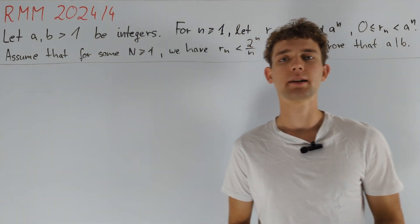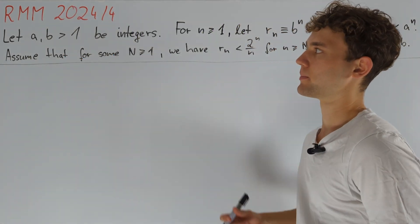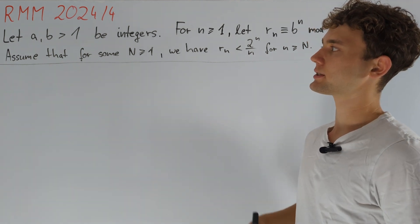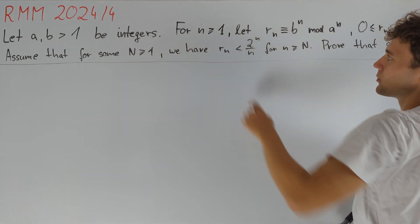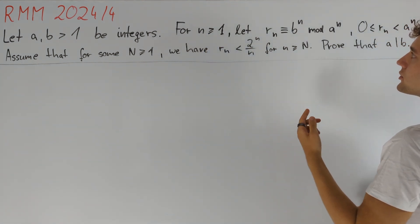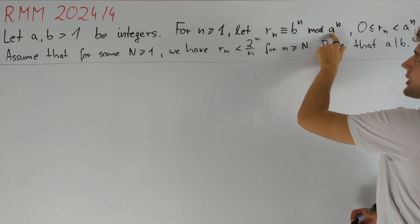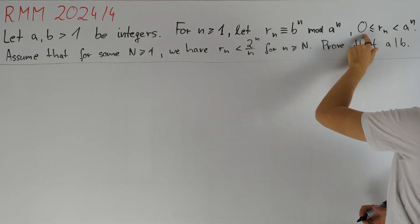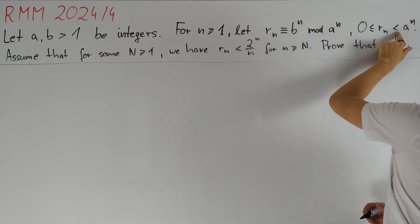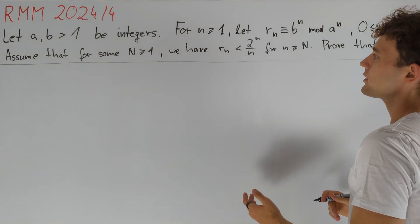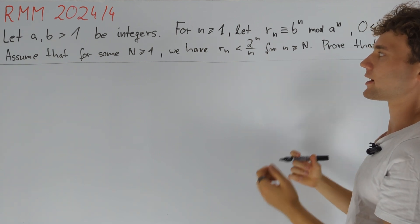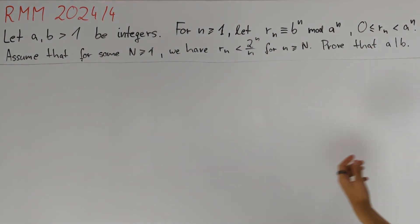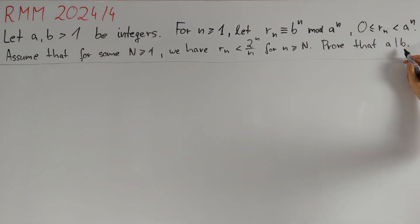Hey guys, in this video I want to present problem 4 from this year's Romanian Masters of Mathematics. We consider two integers a and b greater than 1. For n greater than or equal to 1, we let r_n be the residue of b to the power of n divided by a to the power of n. So 0 ≤ r_n < a^n. We are given that after some point r_n is always strictly less than 2^n / n, and we are asked to prove that this implies a divides b, which just says that r_n always equals 0.